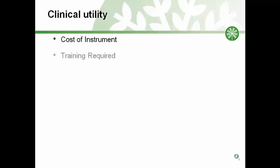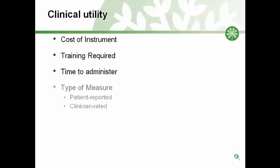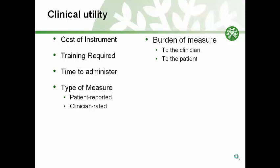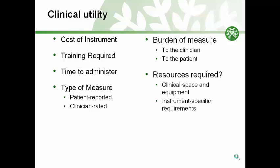Although we want to use an instrument that is valid and reliable, it is important to understand whether the instrument is feasible to administer under the constraints of a clinical practice setting. Common elements of clinical utility include the cost of the instrument, training required to administer it, the time required, the type of measure — whether patient-reported or clinician-rated — the burden to the clinician and patient, and the resources required such as clinical space, equipment, and instrument-specific requirements, as well as organizational constraints. The clinical record management system is an example of an organizational factor.